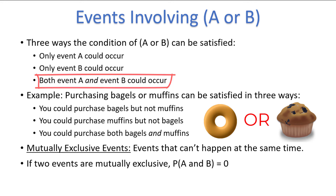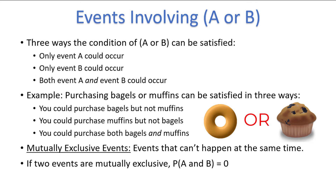For example, if you were to roll a six-sided die once, it's impossible for you to roll both a 1 and a 2. The events rolling a 1 and rolling a 2 are mutually exclusive, and therefore the probability of rolling both a 1 and a 2 in the same roll is zero.